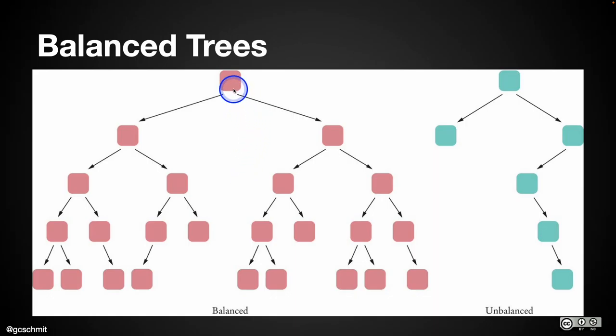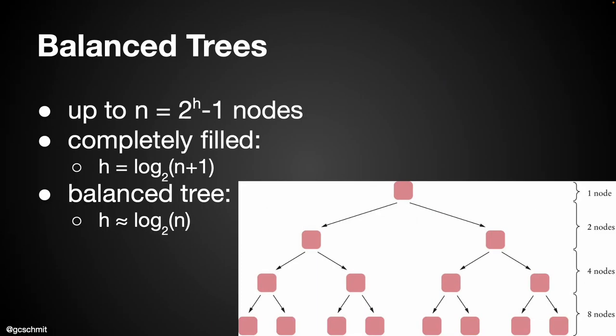An unbalanced tree doesn't meet that criteria — we could have more nodes at this third level, and certainly at the fourth and fifth levels. The reason we care about trees being balanced is because it can have a significant impact on the performance of the algorithms we run on our tree. There's a whole set of algorithms out there that rebalance trees — rearranging the nodes to make other algorithms run more efficiently.